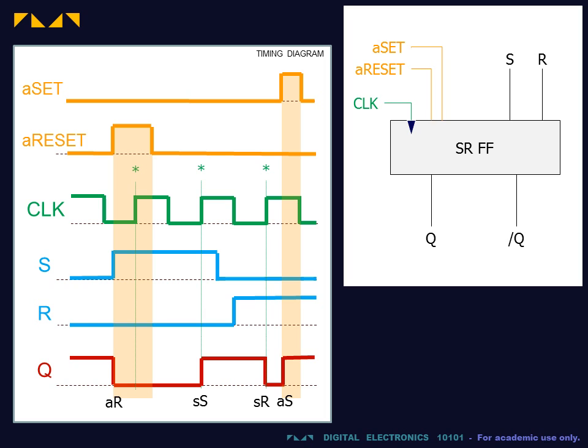By contrast, the asynchronous set and reset are independent of the triggers and override all other inputs. Thus, while the A reset input is active, Q is immediately reset to zero and remains zero while A reset is active. Likewise, while A set is active, Q is set to one.